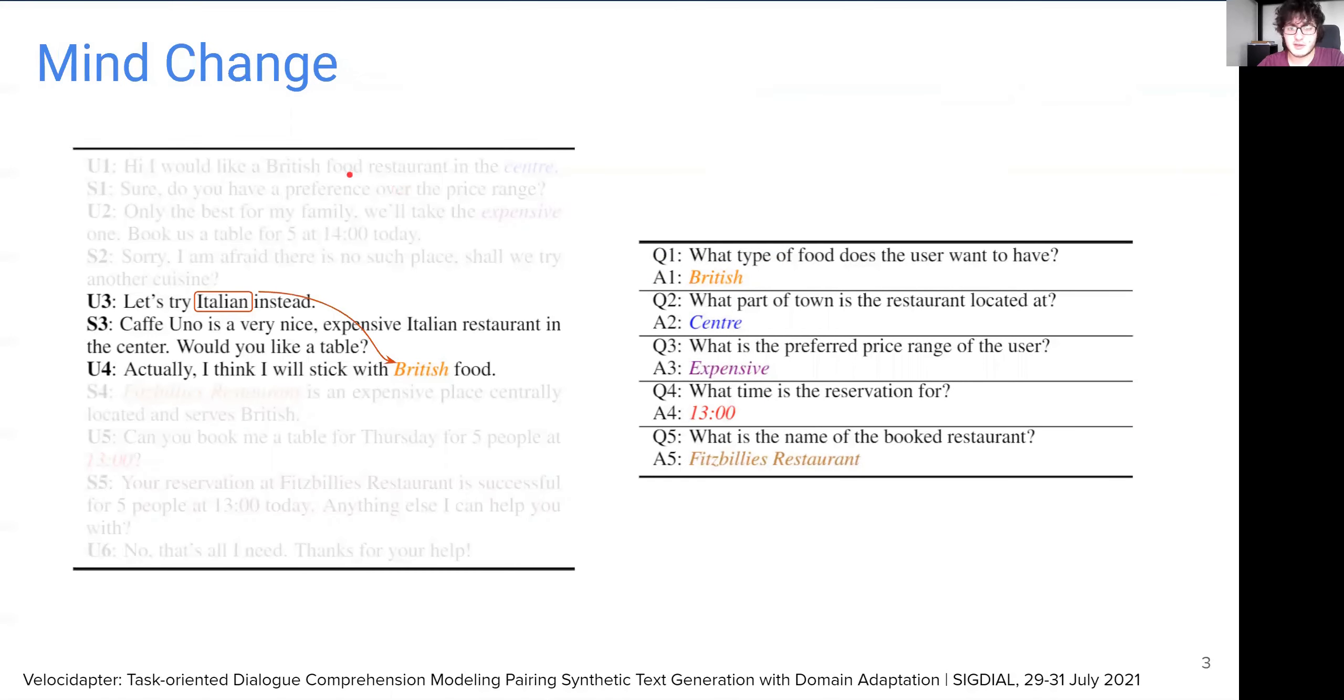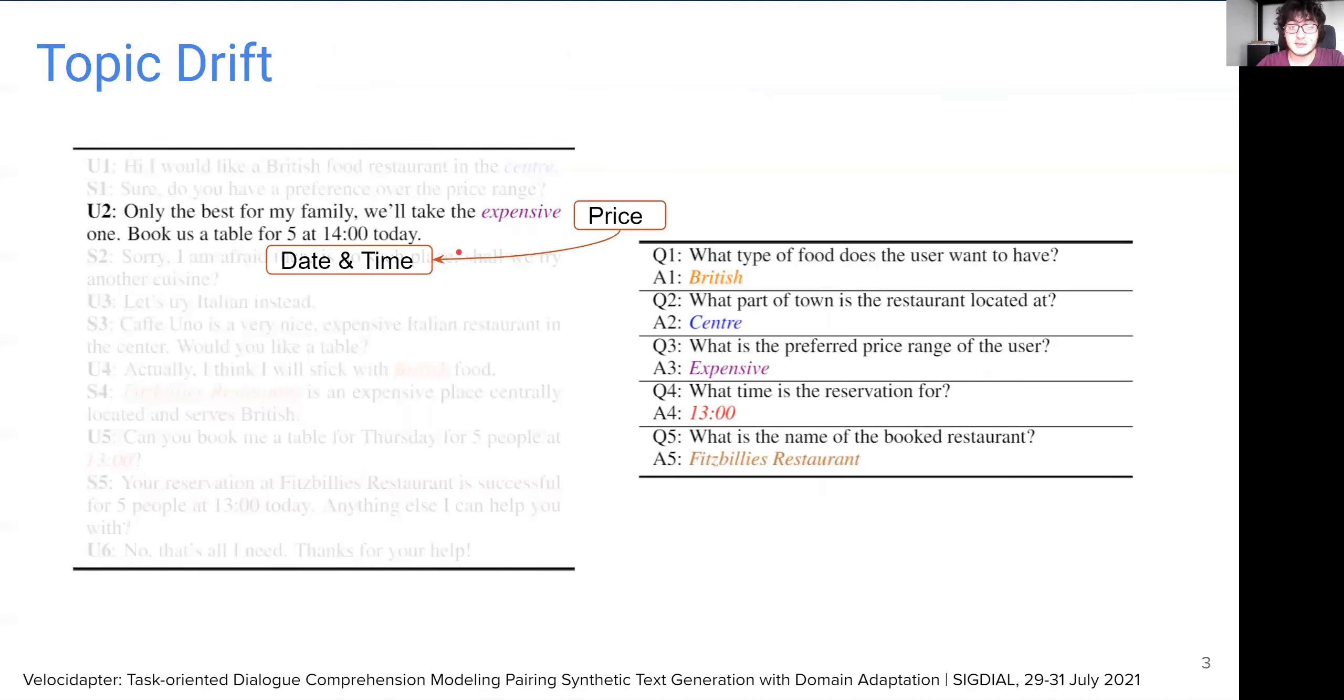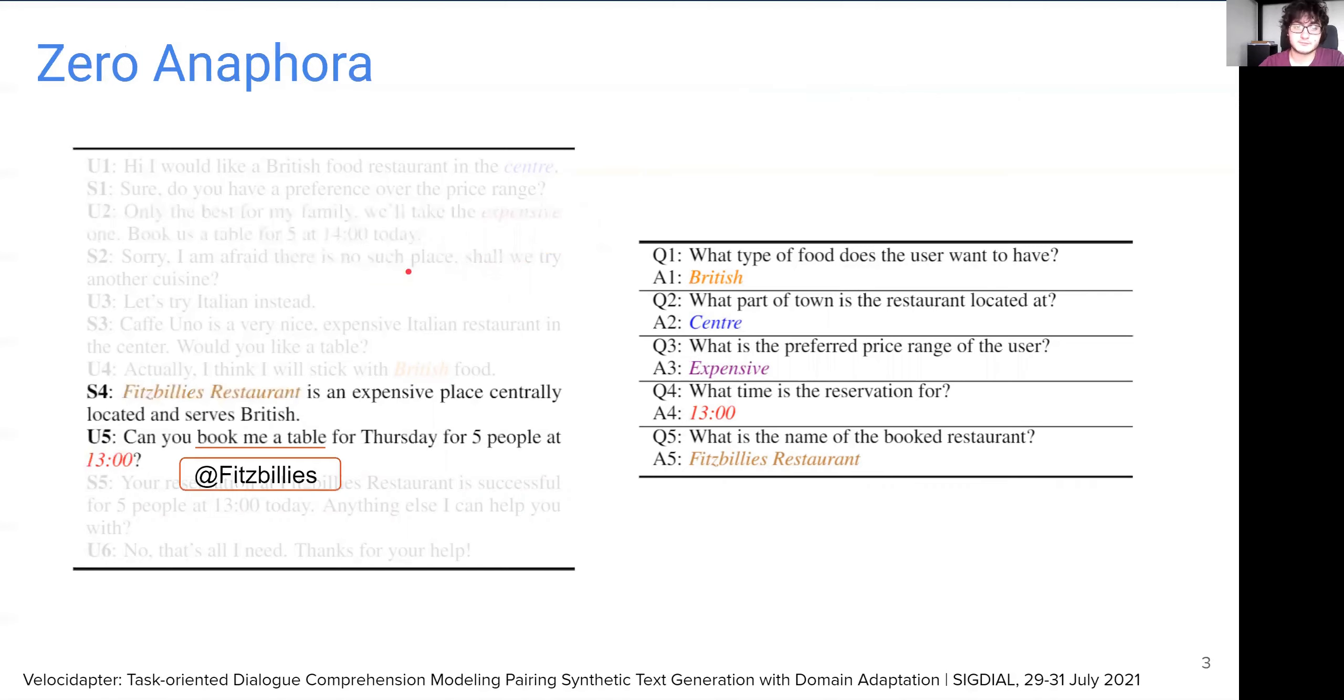Unlike written passages, dialogues are created on the go, so mind change can occur frequently for this type of data. Another such disfluence happens when the speakers change the topic abruptly, whereas for written passages the flow is usually smoother. Also, zero anaphora is quite common. Because multiple people are conversing, they may refer to the same entity in several different ways.